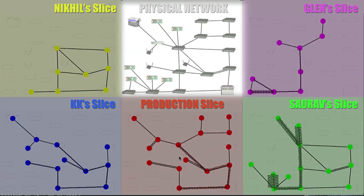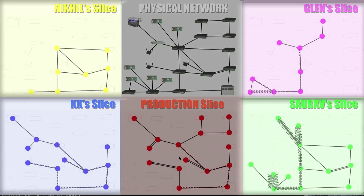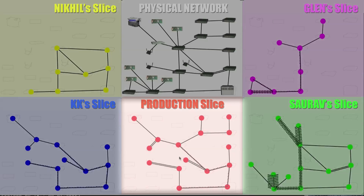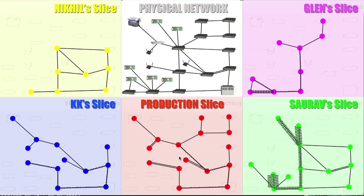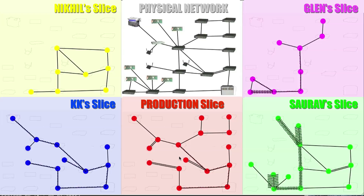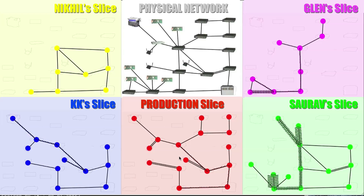What you're seeing here is a graphical monitoring program of the sliced Stanford OpenFlow network. The physical network, shown in the top middle, is sliced into four experimental slices shown in each of the four corners, and one production slice shown in red in the bottom middle. Note that this is the same physical network on which we read our email and surf the web, so if the FlowVisor does not correctly maintain isolation between the slices, then we are the first to know about it.